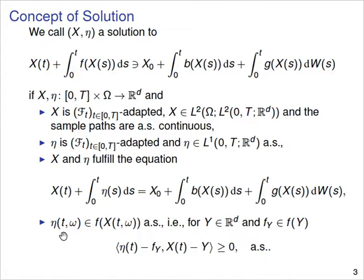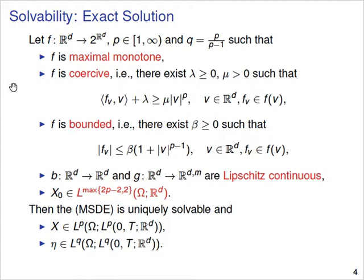Since we assumed f is a monotone mapping, we require η to ensure this monotonicity, so we want something like f of x minus f of y tested with x minus y to be non-negative. Such an equation has an exact solution if f is maximum monotone and coercive, p is a value between 1 and infinity, q is its conjugated Hölder exponent, and f fulfills a polynomial growth condition with leading exponent p minus 1. With b and g Lipschitz continuous and an integrable initial value, the multivalued equation is uniquely solvable, where x is Lp integrable and η is Lq integrable.